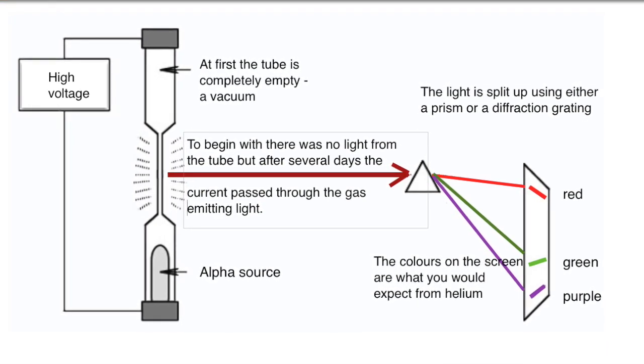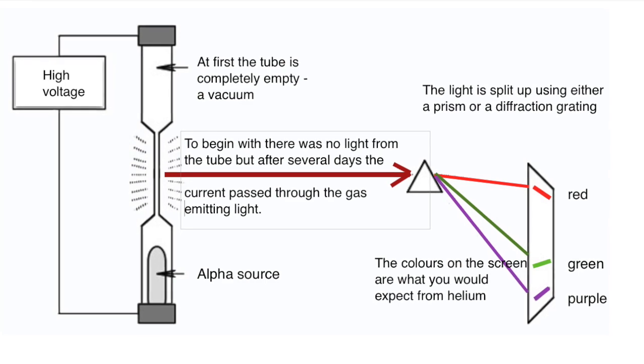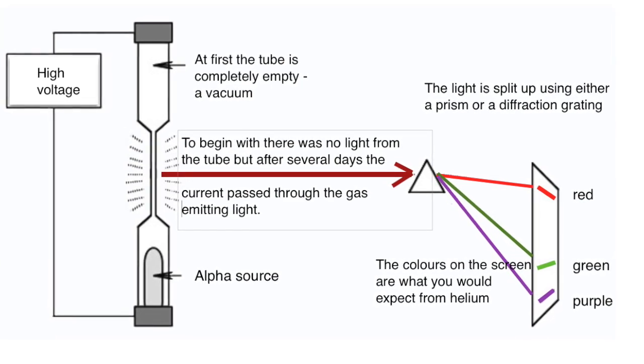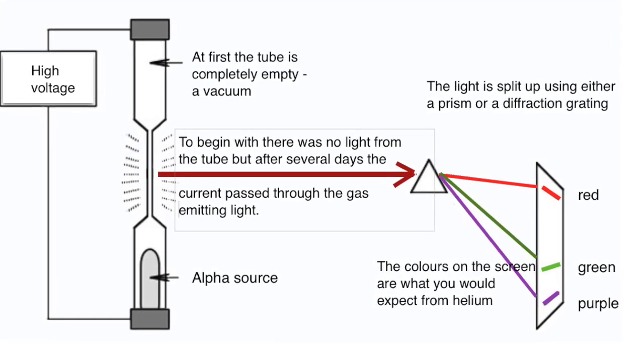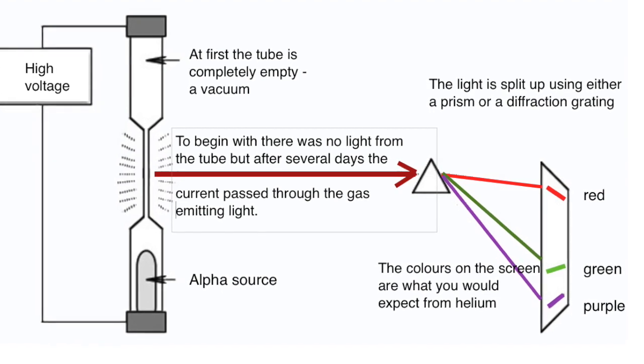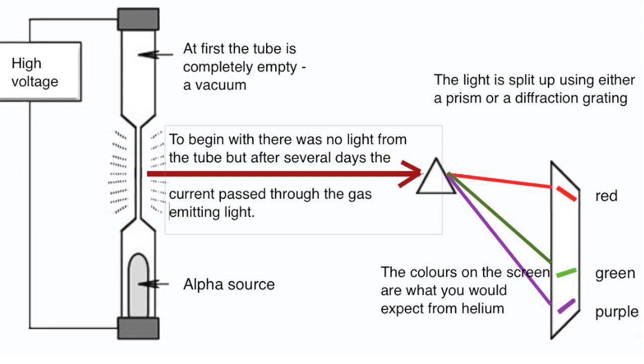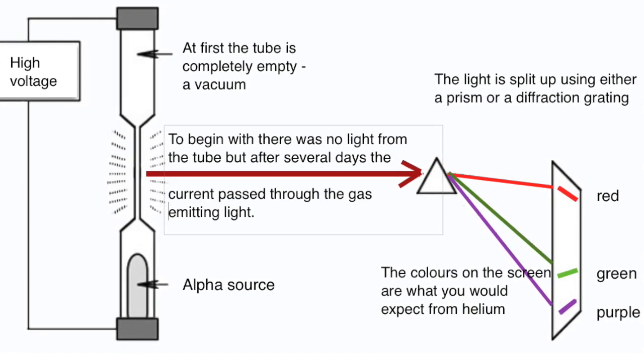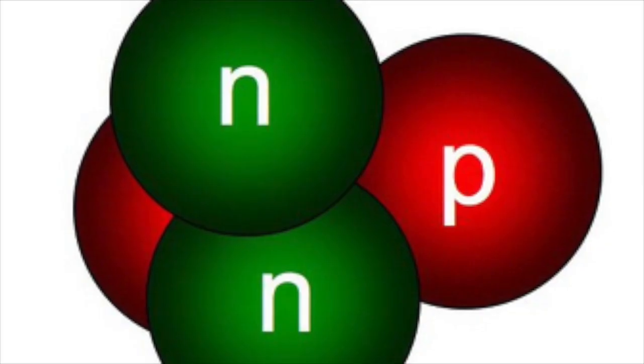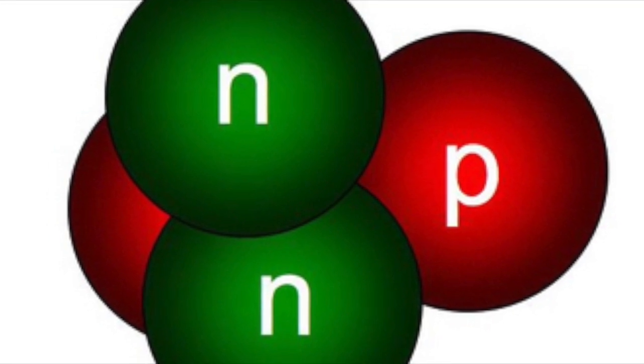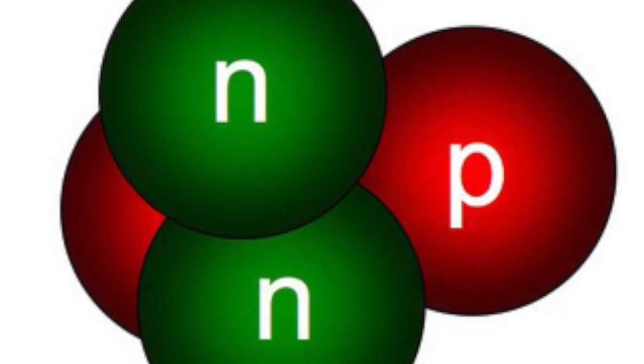The colors that were observed—the red, the green, and the purple—were typical for a helium spectrum, for helium gas. So the fact that alpha particles are positively charged, together with this last piece of conclusive evidence, shows that alpha particles are helium nuclei consisting of two protons and two neutrons.